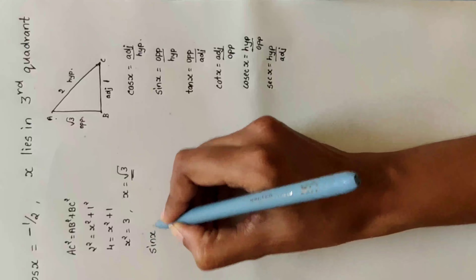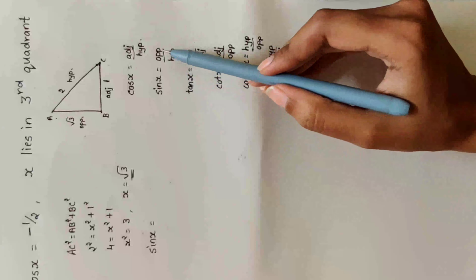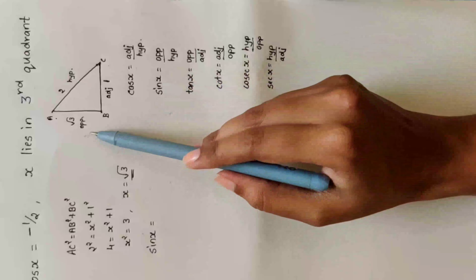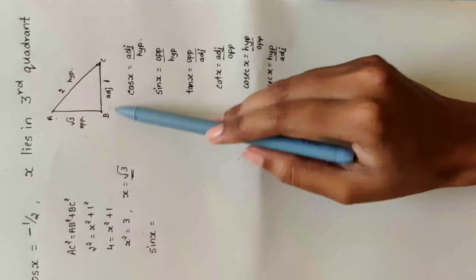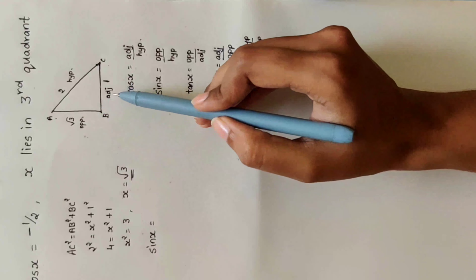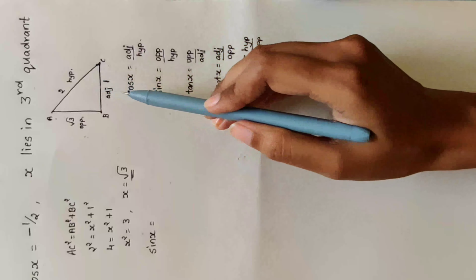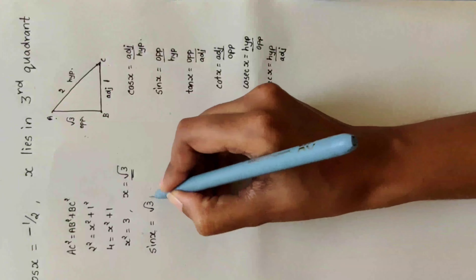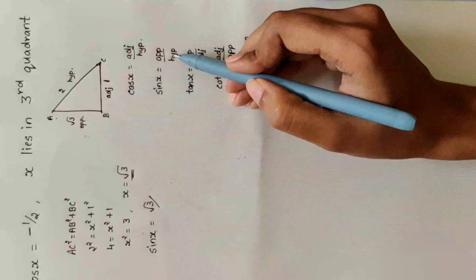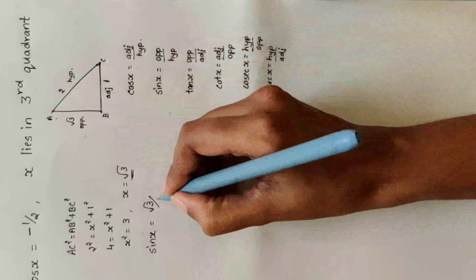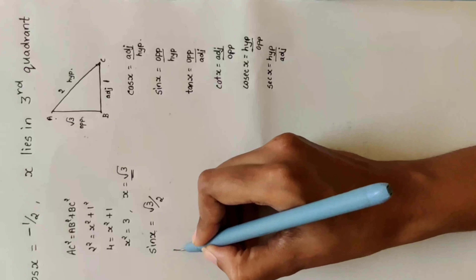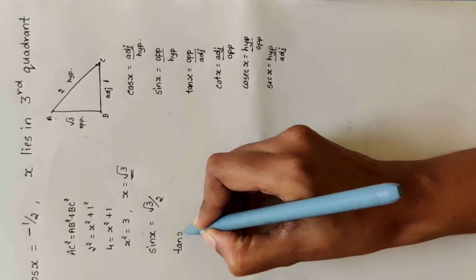Sin x is nothing but opposite divided by hypotenuse. Whenever you draw a triangle diagram, just mark opposite, adjacent, and hypotenuse roughly — this way you won't make mistakes in the exam. So sin x = opposite divided by hypotenuse = √3 divided by 2, which gives √3 by 2.